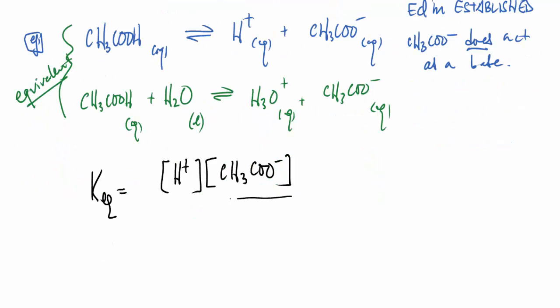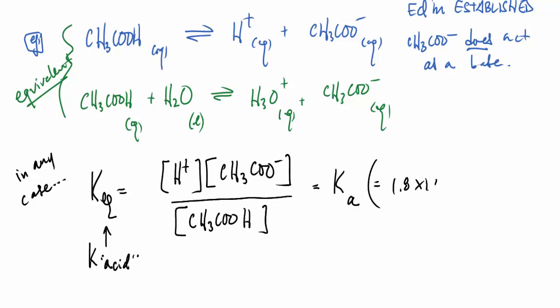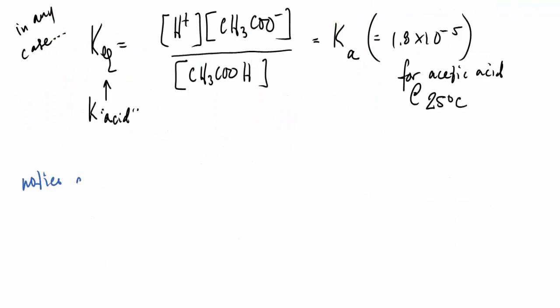Now the Keq of this situation here would be the guys on the right divided by the one on the left, get all the concentrations together. And this Keq, we're going to call Ka, because it's an acid-base dissociation reaction. And for acetic acid, it turns out to be 1.8 by 10 to the minus 5 at 25 degrees Celsius.